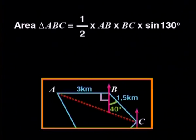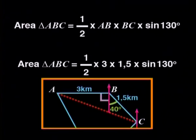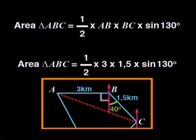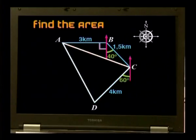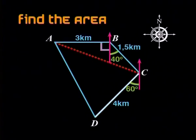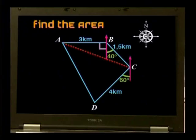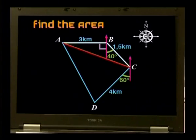The area will be half times AB times BC times sine of 130 degrees — that's 0.5 times 3 times 1.5 times sine of 130 degrees. But before we go to the calculator, let's see how we can find two sides and the included angle in triangle ADC. That gives us a problem: we only have the 4 km side, and I can't see how we can work out the angle.